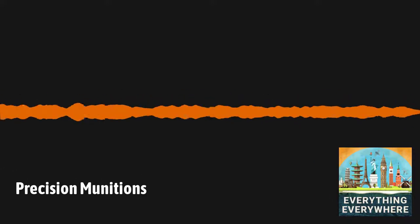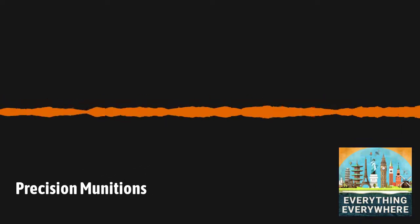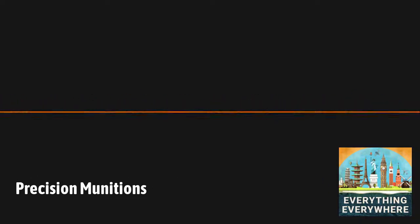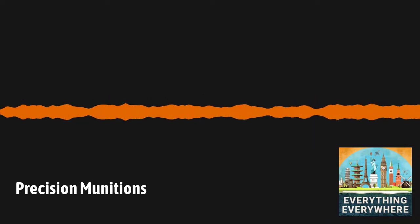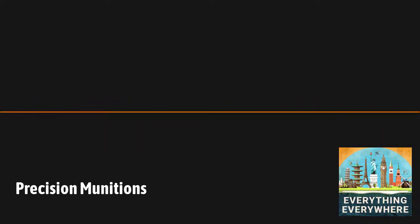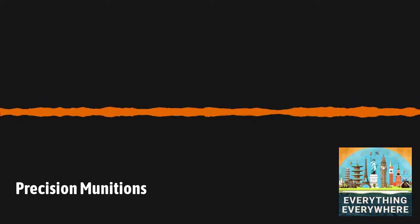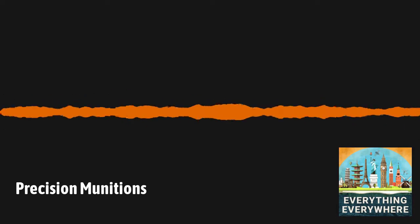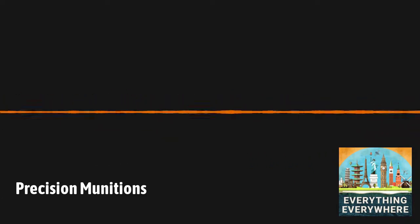The smart bombs used during the Gulf War were almost all of the laser-guided variety. There is one big problem with laser-guided bombs. The person operating the targeting laser has to be able to see the target. If there's smoke or cloud cover, then they won't work.